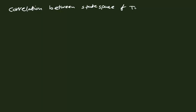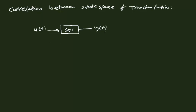Hello, in this lecture we need to see the correlation between transfer function and state space. If I have a system or plant with input U(t) and output Y(t), we need to write the state equation and output equation: X-dot(t) equal to A·X(t) plus B·U(t).